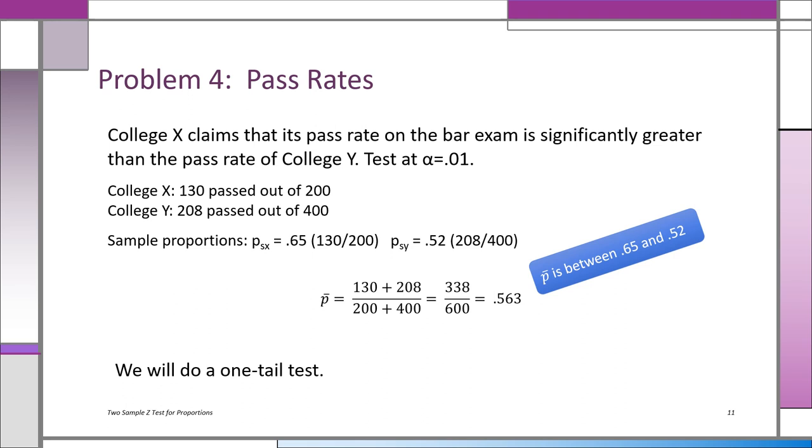And we have to first get, as we know, same as before, we have to compute p bar, the average proportion of the samples as if they were one. So you have the two numerators, the two denominators, and you end up with a p bar of 0.563. Make note that this 0.563 should be in between the two sample proportions, and indeed it is. All right, so let's see how that one-tail test looks on the next slide.